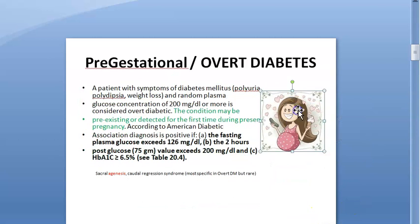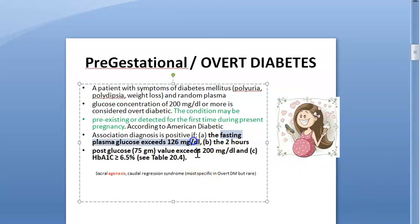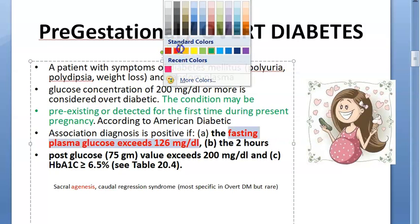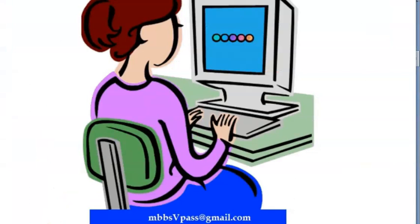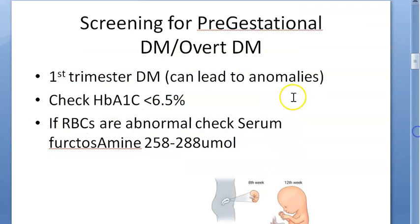How do you know she has overt or pre-gestational diabetes? Her fasting glucose exceeds 126 mg/dL — that is, fasting plasma glucose greater than 126 mg/dL will indicate that she has diabetes.